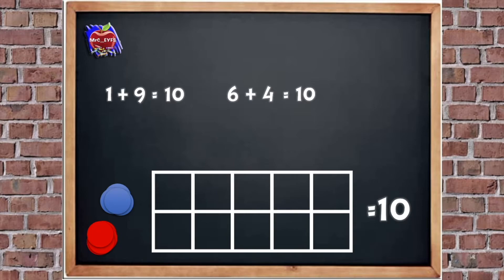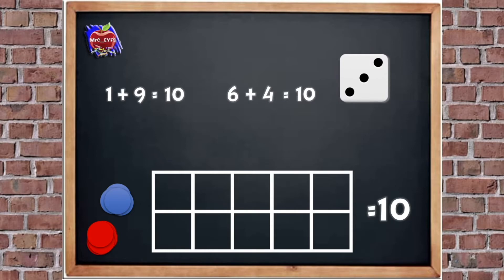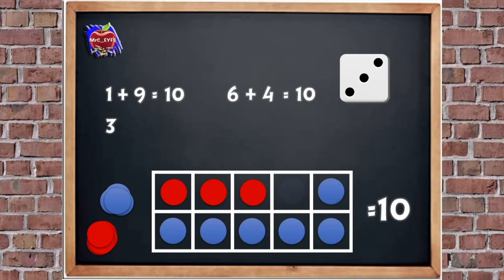Amazing. Let's do one more and I want you to tell me what to do. Let's roll the dice. What number have I got? What do I need to do? Yeah, let's put three into our frame: one, two, three. I'm going to put three up here. Now we need to fill up the rest with our blue counters: five, six, seven. So I put my seven in the number sentence. And how many does it equal altogether? Ten, because it's full. So our number sentence reads three add seven equals ten. Amazing job.